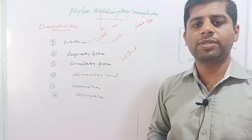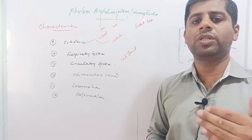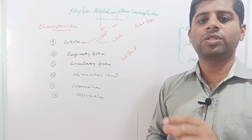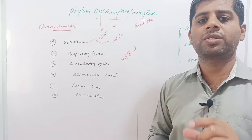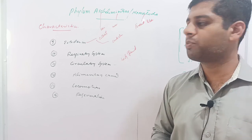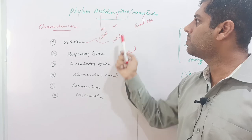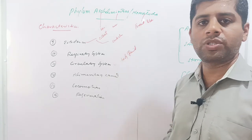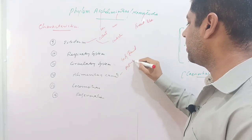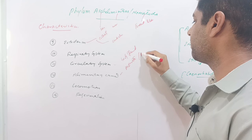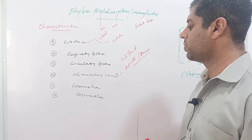The alimentary canal is basically a tubular digestive tract extending from the mouth to the anus — starting from the mouth, pharynx, esophagus, stomach, intestines, and anus. This constitutes the alimentary canal, which is present and well developed in nematodes, with both mouth and anus present.